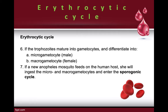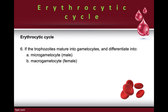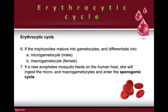If a new female Anopheles feeds on the human host, she will ingest both the micro and macro gametocytes, which will then enter the sporogonic cycle inside the mosquito. To clarify: the exo-erythrocytic and erythrocytic cycles happen within the human host, while the sporogonic phase happens inside the mosquito.